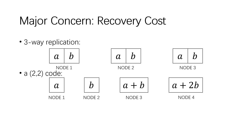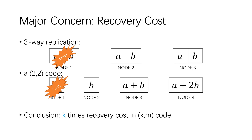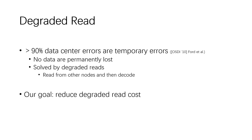Recovery cost is one of the major concerns. When we want to read data A and no node fails, in three-way replication we can read A from node 2 or node 3. But we need to read data from at least two nodes in a (2,2) code. In a (K,M) code, recovery cost reaches K times. Prior work shows that more than 90% of data errors are temporary errors due to network partitions, hotspot effects, and load updates. In such situations, node data are not permanently lost. To read such temporarily unavailable data, we read from other nodes and then decode them — this operation is called degraded read.